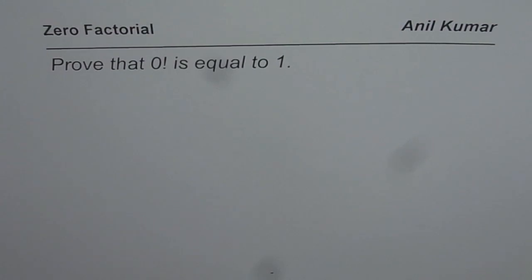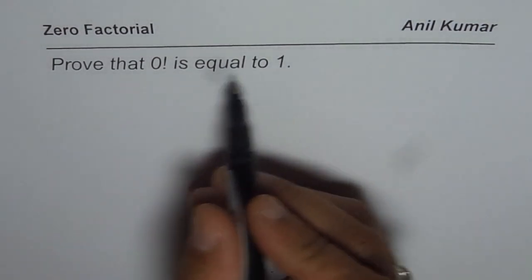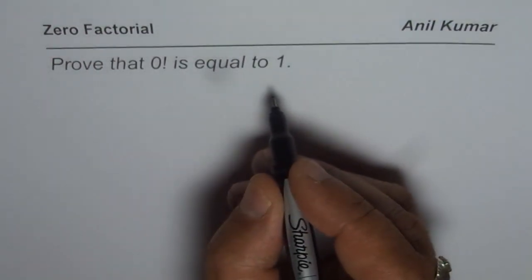Well, the question which I have phrased here is, prove that 0 factorial is equal to 1. You know, 0 factorial is equal to 1, or you could also say 0 factorial is equal to 1 factorial. Now, the question is, how to prove it? There is a very simple method of proving this.